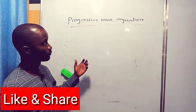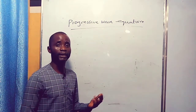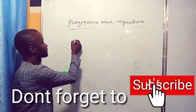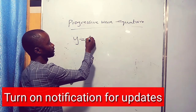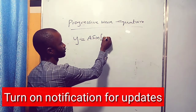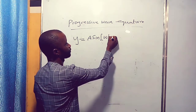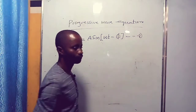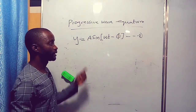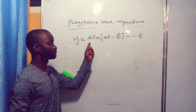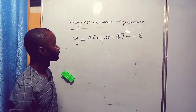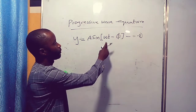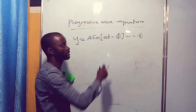For example, you have a progressive wave with displacement y moving through a distance x, and the equation can be given as y equal to A sine open bracket ωt minus φ. Call this equation 1. y represents vertical displacement, a represents amplitude of the wave, ω represents angular frequency, t represents time taken, and φ is the phase angle.